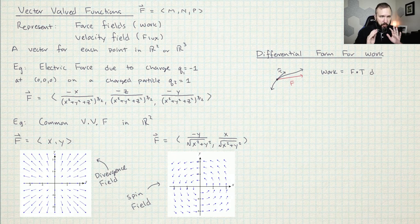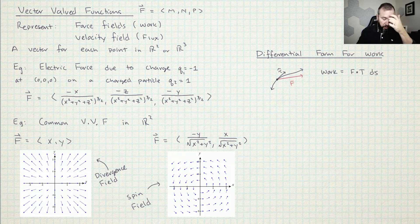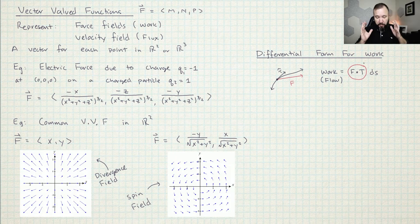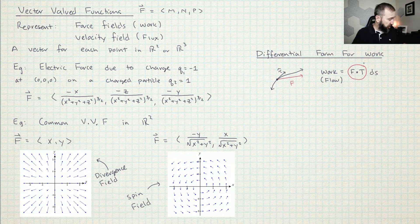Now I want to derive the differential form for work. This problem is about flow because we're doing work — it's force times distance. The issue is that not all of the force is going into moving you along the path. We just need to project the force onto the direction that you're moving, so we know the actual amount of force that's pushing the particle forwards.